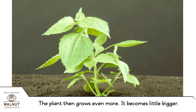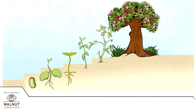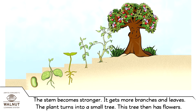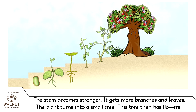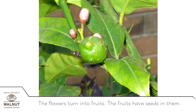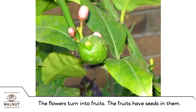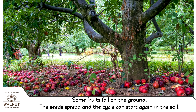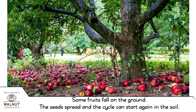The plant then grows even more. It becomes a little bigger. The stem becomes stronger. It gets more branches and leaves. The plant turns into a small tree. This tree then has flowers. The flowers turn into fruits. The fruits have seeds in them. Some fruits fall on the ground. The seeds spread and the cycle can start again in the soil.